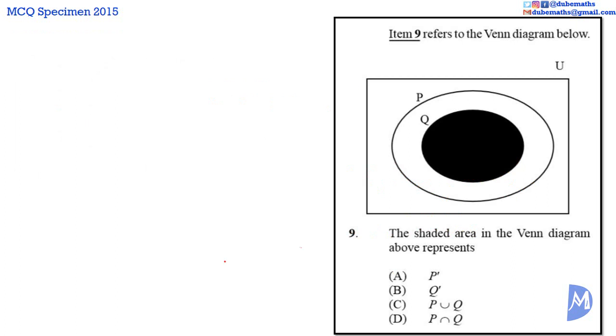Question 9. The shaded area in this diagram is the area common to both P and Q. Thus, the answer is D, P intersect Q.